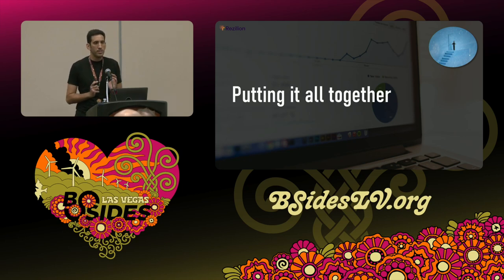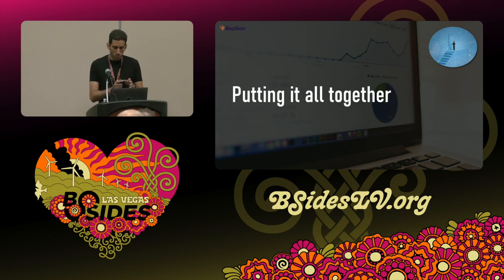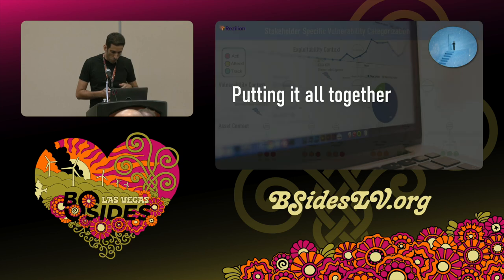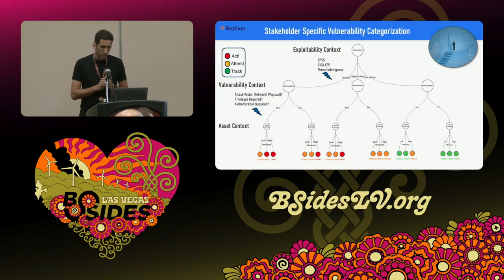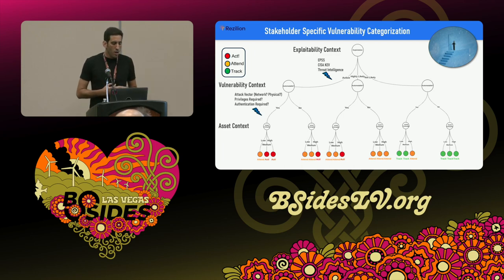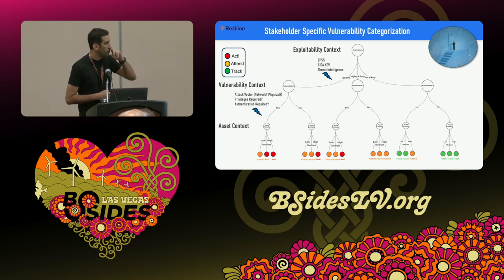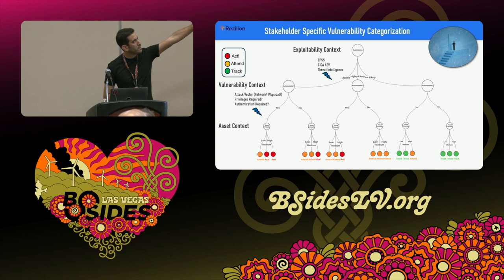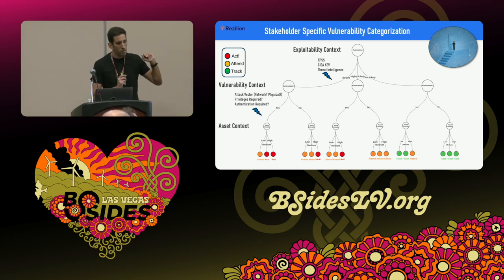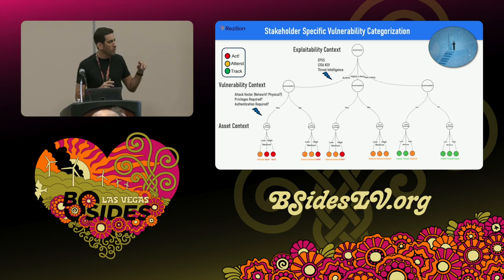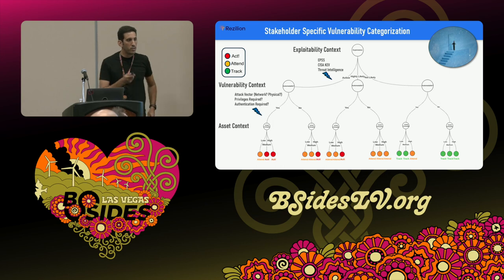Now I'll try to put all these pieces together. SSVC — Stakeholder-Specific Vulnerability Categorization — think of it as a decision tree that allows you to decide what to do in various circumstances regarding a specific vulnerability. There are three actions using the CISA approach: Act (patch/remediate now), Attend (I need to fix this but will prioritize Act items first), and Track (not actively addressing but keeping an eye on it).